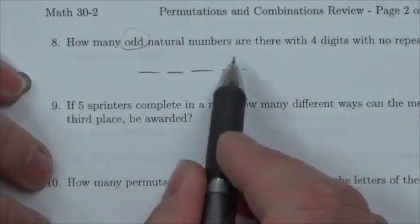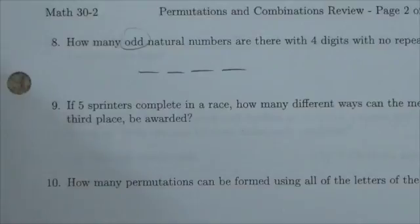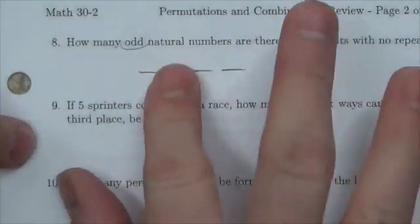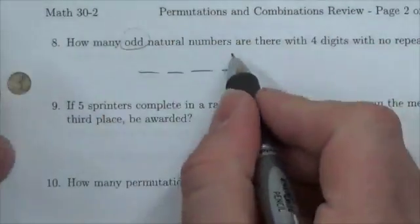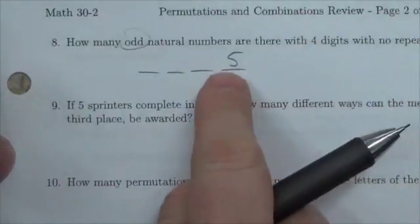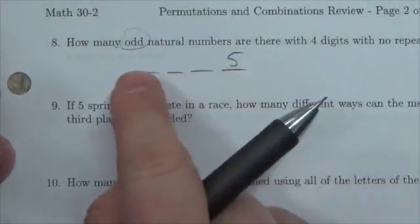How many options are there? It could be one, three, five, seven, or nine. So I've got five options for what this digit could be. Now let's go to the first digit.